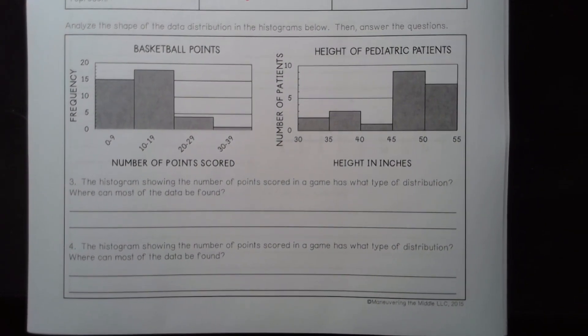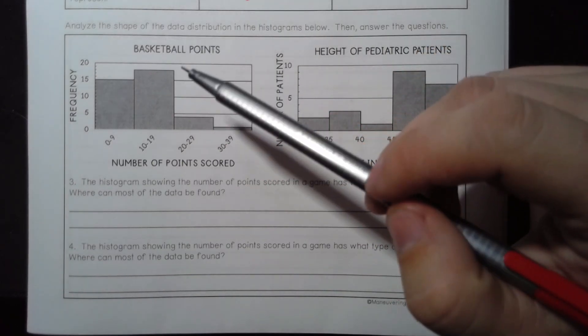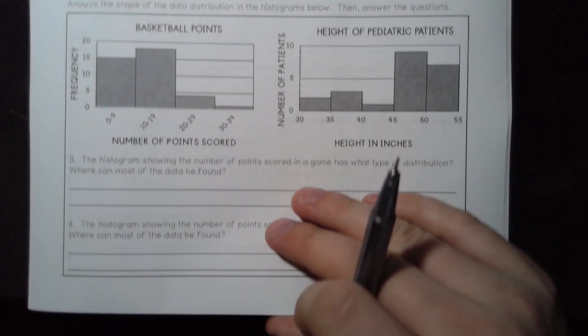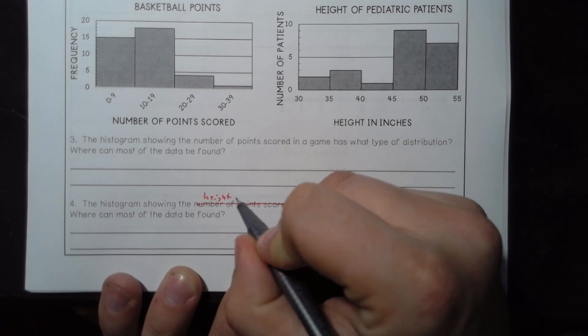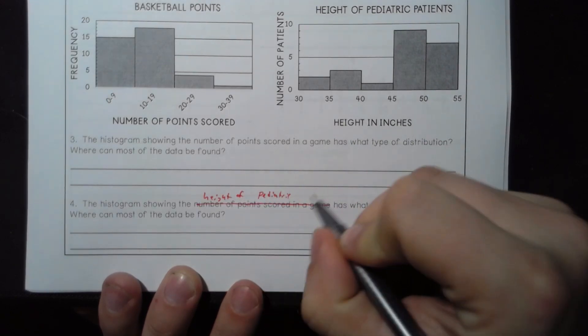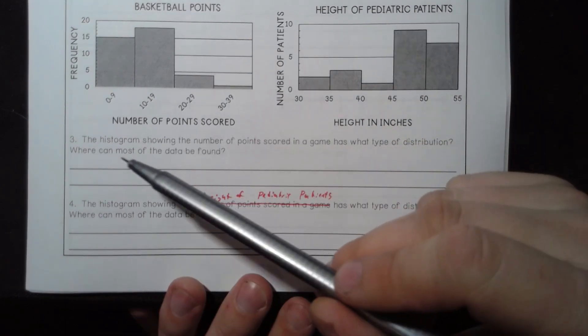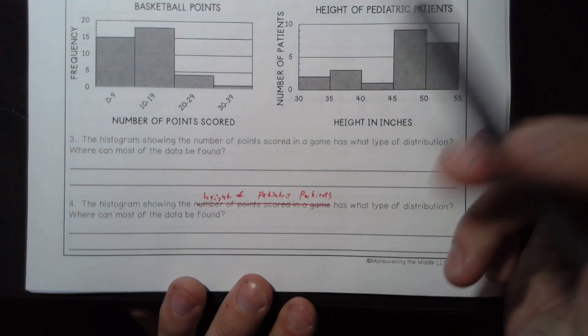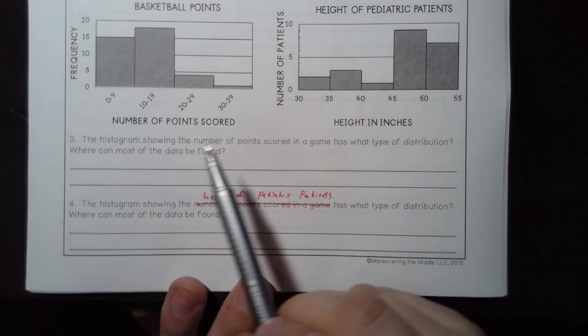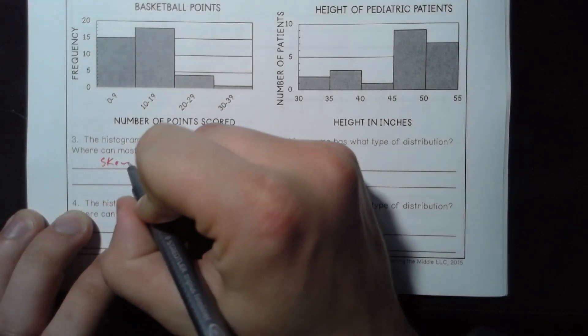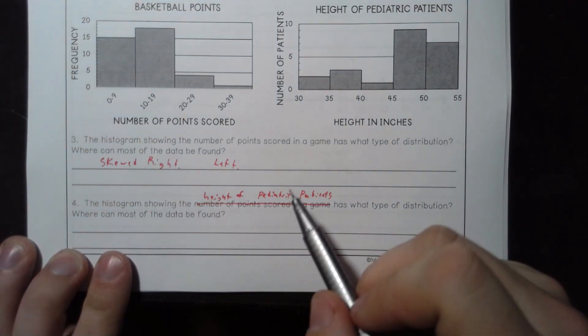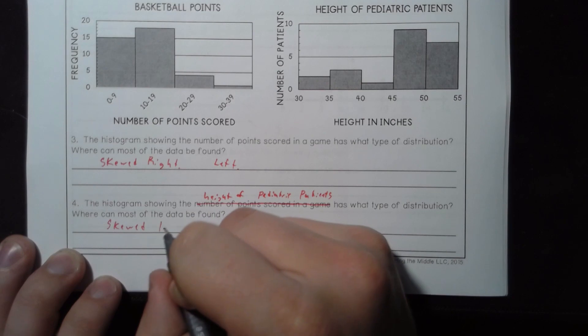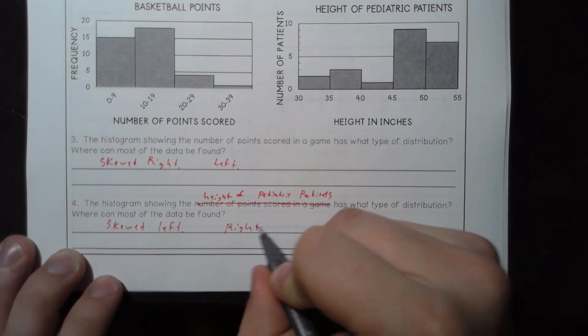Analyze the shape of the data distribution in the histograms below, then answer the questions. So let's see, we've got baseball points. There's kind of a typo in this one, in that it asks the same question twice. So I'm gonna change this to height of pediatric patients. There we go. So, what can most of the data be found? The histogram shows a number of points. What is the type of distribution? Skewed right, definitely. Skewed right, absolutely. Where can most of the data be found? To the left. What about the number of patients? This one is the opposite. This one is skewed left. Where can most of the data be found? Right. There we go.